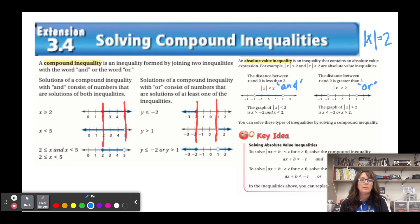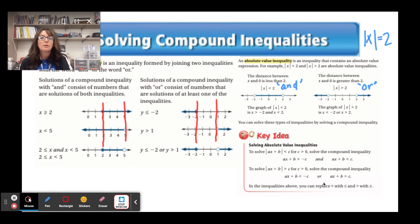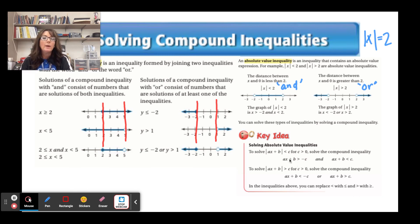You can solve absolute value inequalities by solving the compound inequality. The key idea: for |ax + b| < c, you make two cases. When you change c to a negative, you must reverse the inequality symbol. When you leave c positive, you keep the same sign. The same happens with the 'or' case — changing to negative c reverses the symbol, giving two solutions.